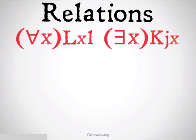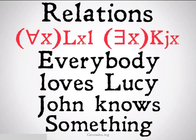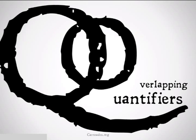Relations can also have quantifiers out in front of them, as we've seen with normal predicates. The first example: for all X, X bears the love relation to L — so everybody loves L, or everybody loves Lucy, perhaps. The second: there exists an X such that J bears the knowledge relation to X — so John knows something; there exists some X that John knows. Those are basic translations of relational statements.